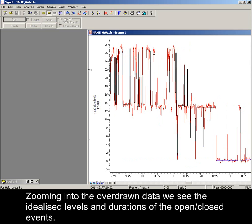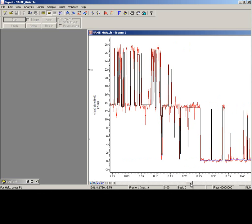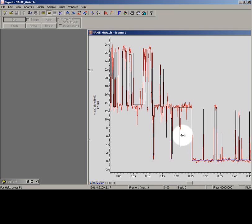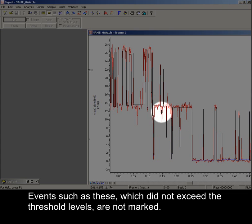Zooming into the overdrawn data, we see the idealized levels and durations of the open-closed events. Events such as these, which did not exceed the threshold levels, are not marked.